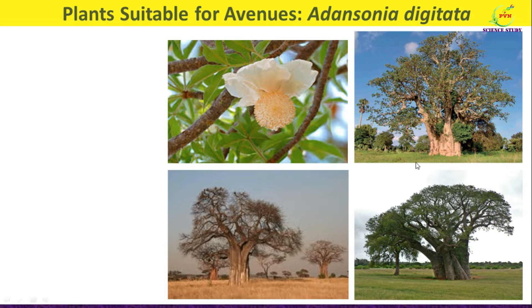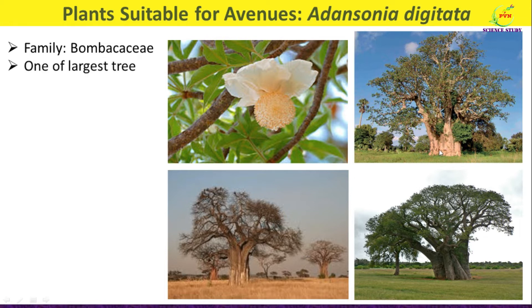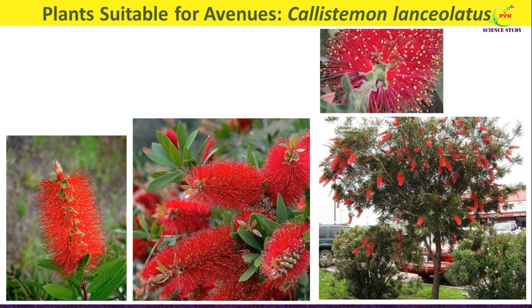The first plant suitable for avenues is Adansonia digitata, belonging to family Bombacaceae. As you can see in this photograph, this is one of the largest trees, having bright crimson large flowers. The flowers are beautiful and therefore the tree is an imposing sight when flowering. Due to its very attractive and big size, Adansonia digitata is used as an avenue plant in gardens as well as in estates.